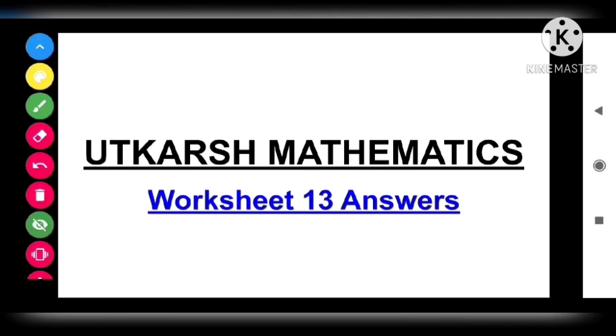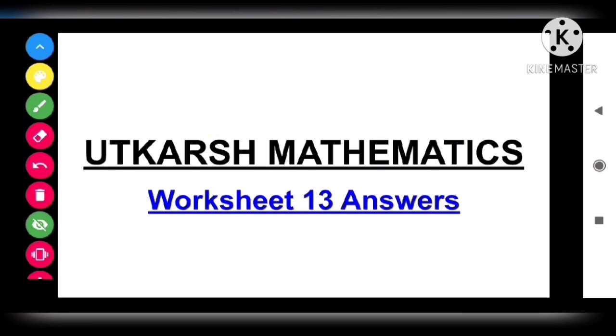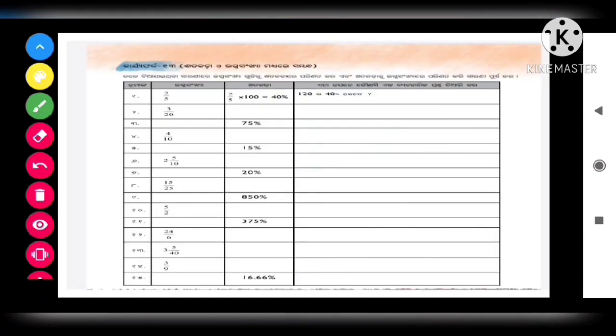Today we are going to solve Utkarsh Mathematics Worksheet 13. Friends, the topic is the relationship between percentages and fractions. Convert the fractions given in the table to percentages, and convert the percentages to fractions to complete the table.